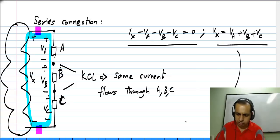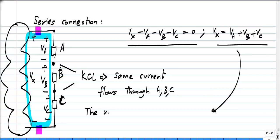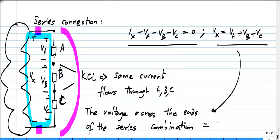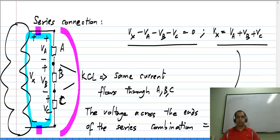This means that the voltage across the ends of the series combination equals the sum of the individual voltages. So this is the definition of series connection: the same current flows through all the elements, and the net voltage between the ends of the series combination is the sum of the individual voltages across the elements.